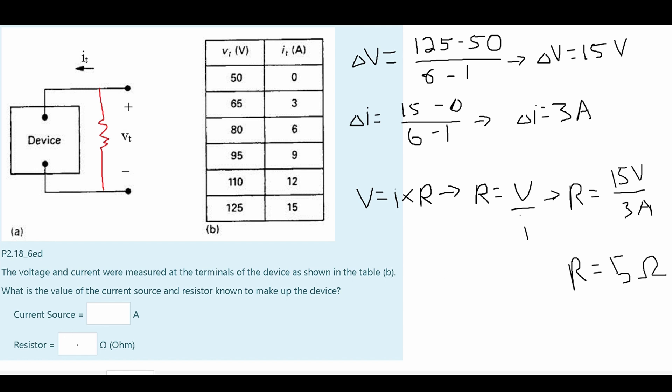For our bottom part, our answer is going to be 5 ohms. Now we're asked for the current source. Current source is going to start at 0. The source is 0. I'm going to draw this in red. We're going to look where our voltage is 50 and current is 0. Now to find the actual current source, since our current source is not 0 but it starts at 0, we're going to have to use this same formula.